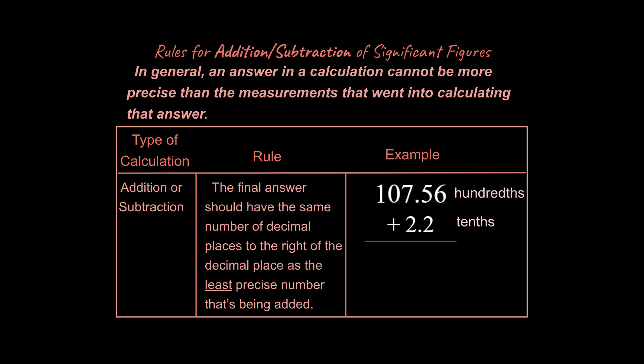So our answer cannot be more precise than either of the two numbers that went into that calculation. So our answer should be down to, what do you think, down to the tenths or the hundredths? First let me show you what we get from our calculator answer. That's our calculator answer, but our final answer should be rounded off to the tenths. And that's because our answer cannot be more precise. You cannot have a hundredths over here because we have a tenths here.